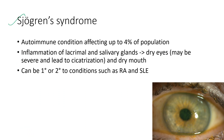Next is Sjögren syndrome. It is an autoimmune condition affecting up to 4% of the population. There is inflammation of lacrimal and salivary glands leading to dry eyes and dry mouth. The dry eyes may be severe and can lead to cicatrization. It can be primary or secondary to conditions like rheumatoid arthritis and systemic lupus erythematosus.